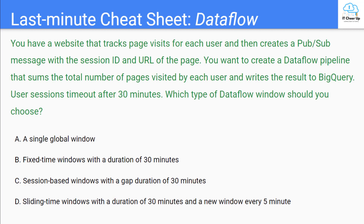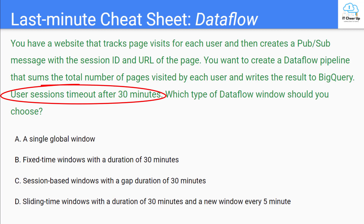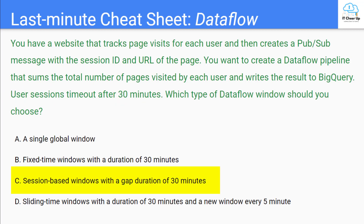Want to try another one? Pause the video and read the question first. This question is very straightforward — user sessions time out after 30 minutes. So the correct answer is C.